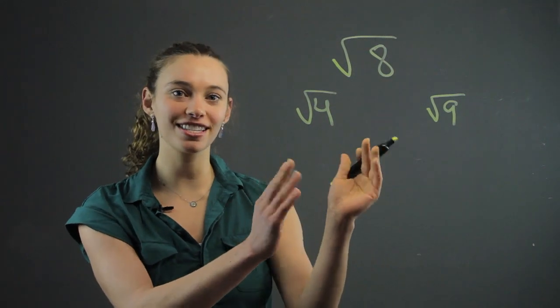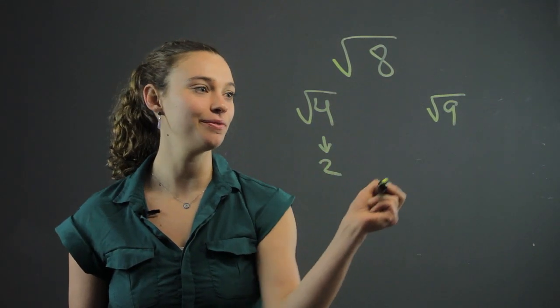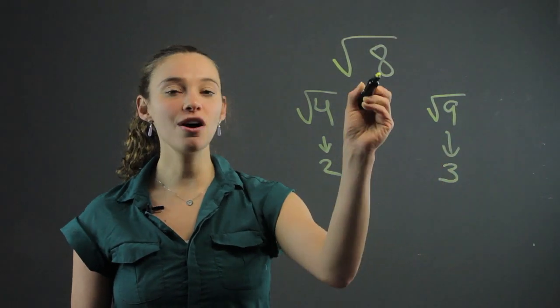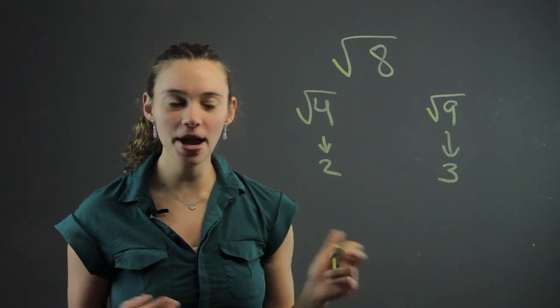So now we have two perfect squares that we know the answer to. Square root of 4 gives us 2, and square root of 9 gives us 3. So we know that 8 is going to be somewhere in between 2 and 3. But where in between?